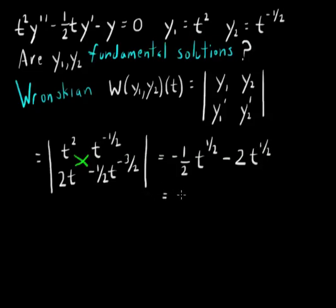So, we're going to get negative five-halves T to the one-half. Now, what do we care about this? Well, what's important here is that we're able to say the following. This is not equal to zero for some T.